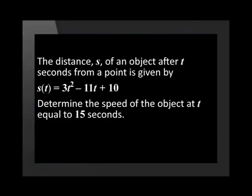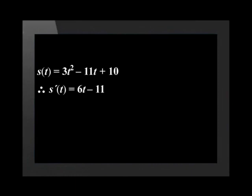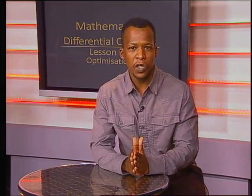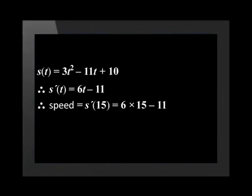Let's extend this problem and involve some calculus. Determine the speed of the object at t equals 15 seconds. The speed of an object at a certain time is the gradient of the tangent to the function at that point. Therefore, we take the derivative of the distance function. The derivative s'(t) is equal to 6t minus 11. To determine the speed at t equals 15 seconds, we substitute t equals 15 into s'(t): s'(15) equals 6 times 15 minus 11, which gives us 79 meters per second.